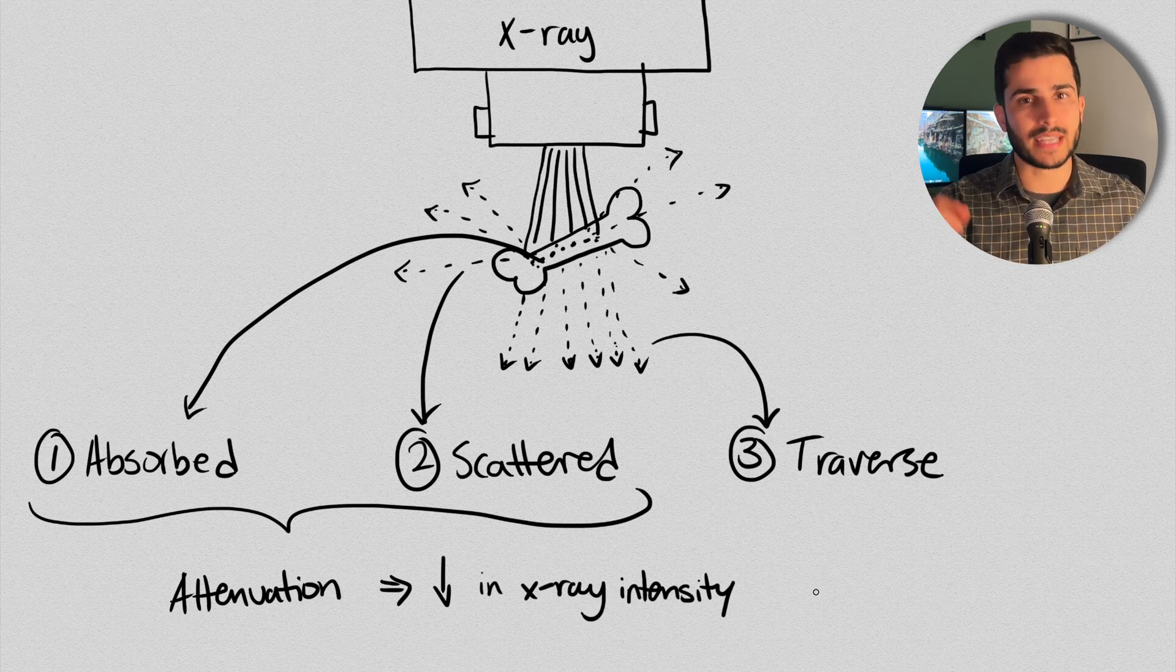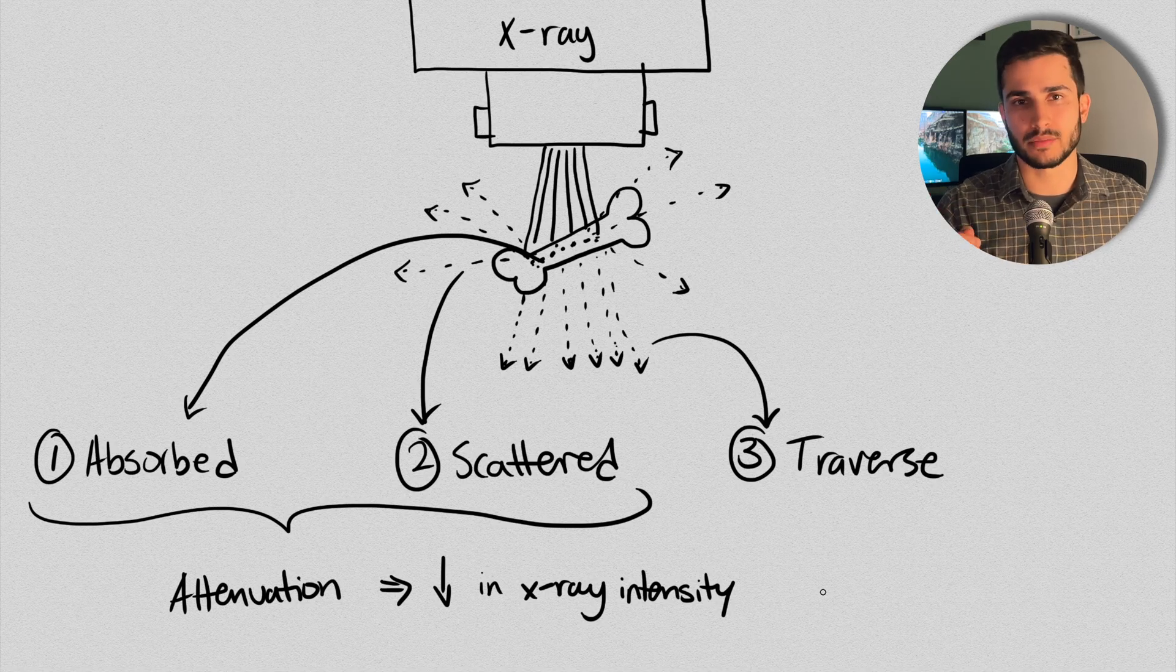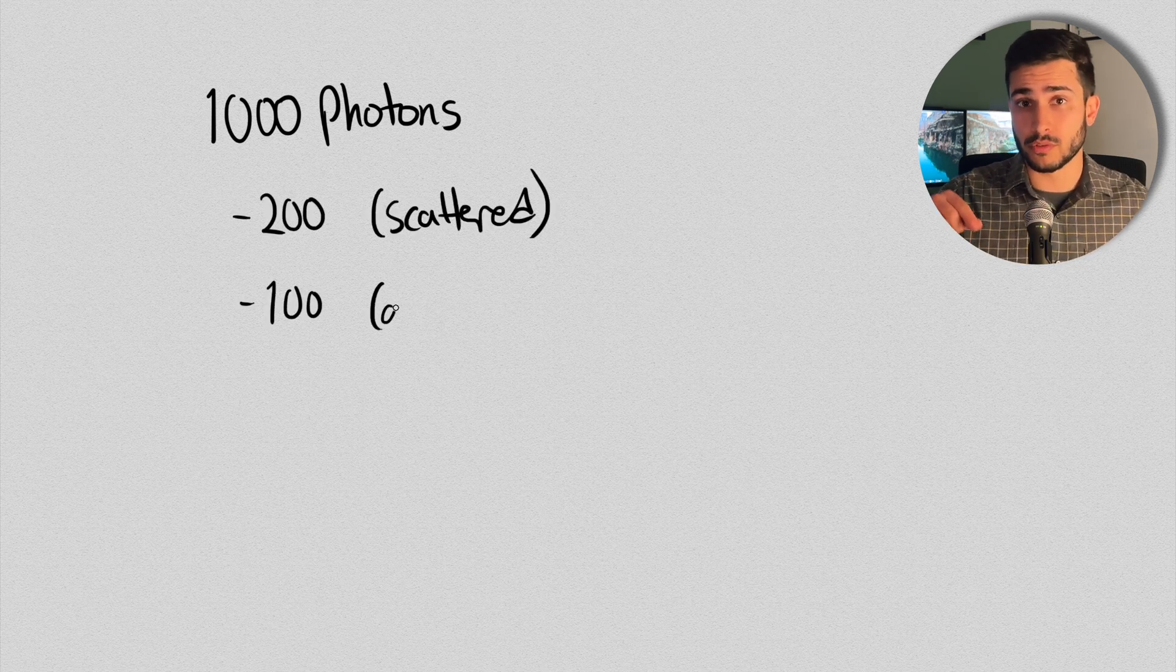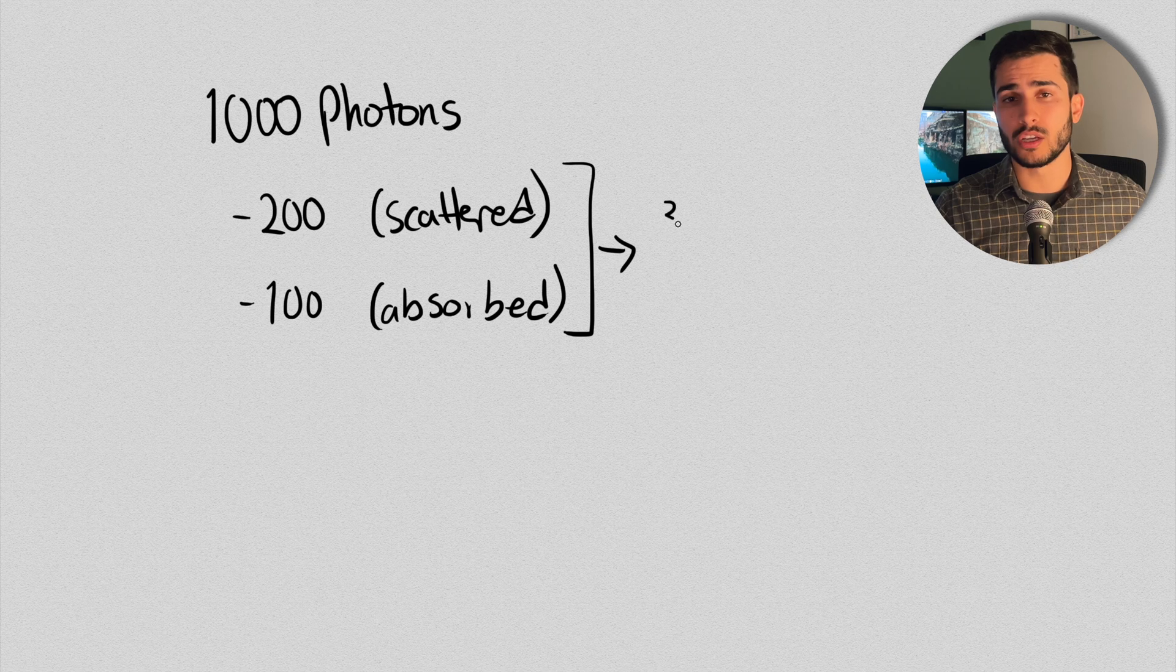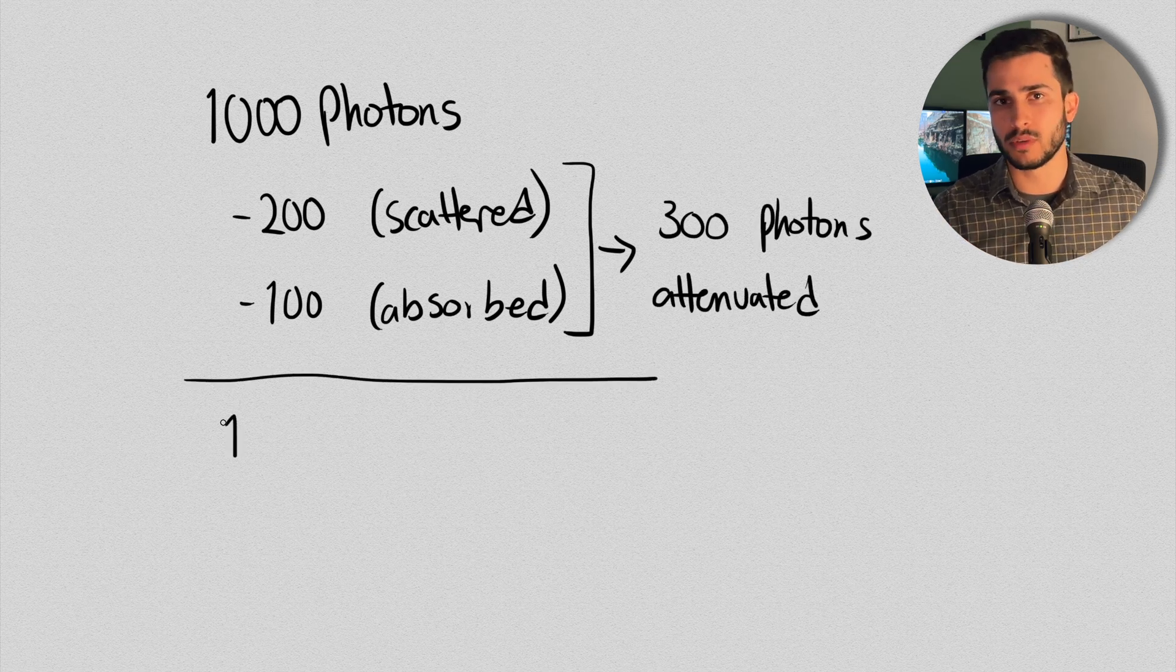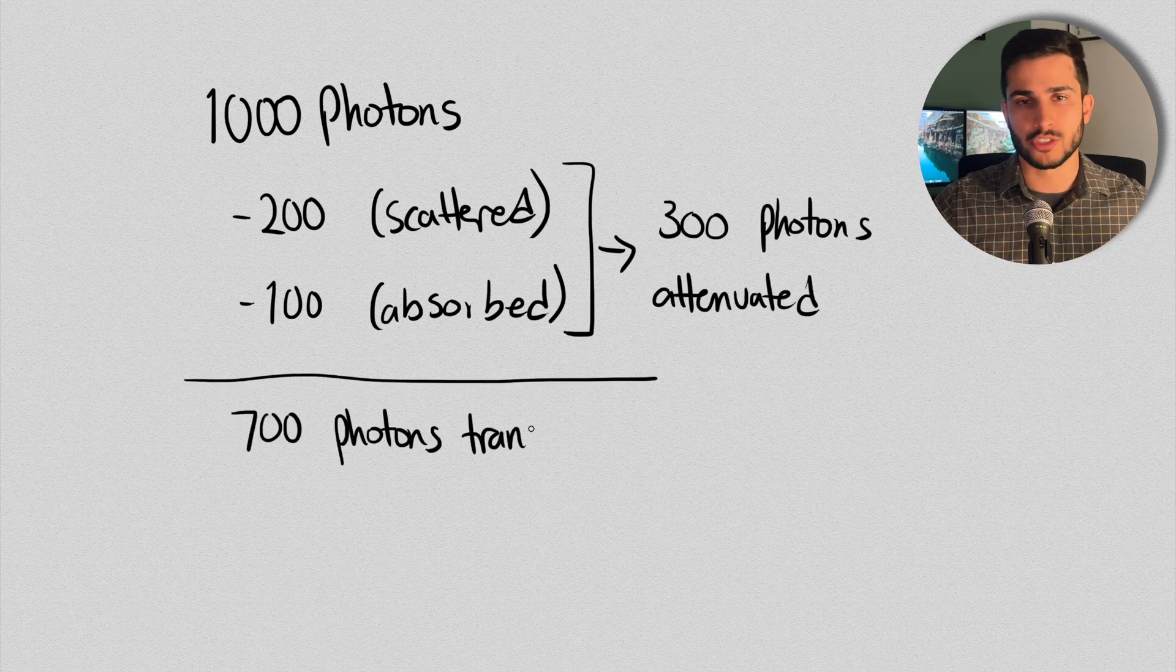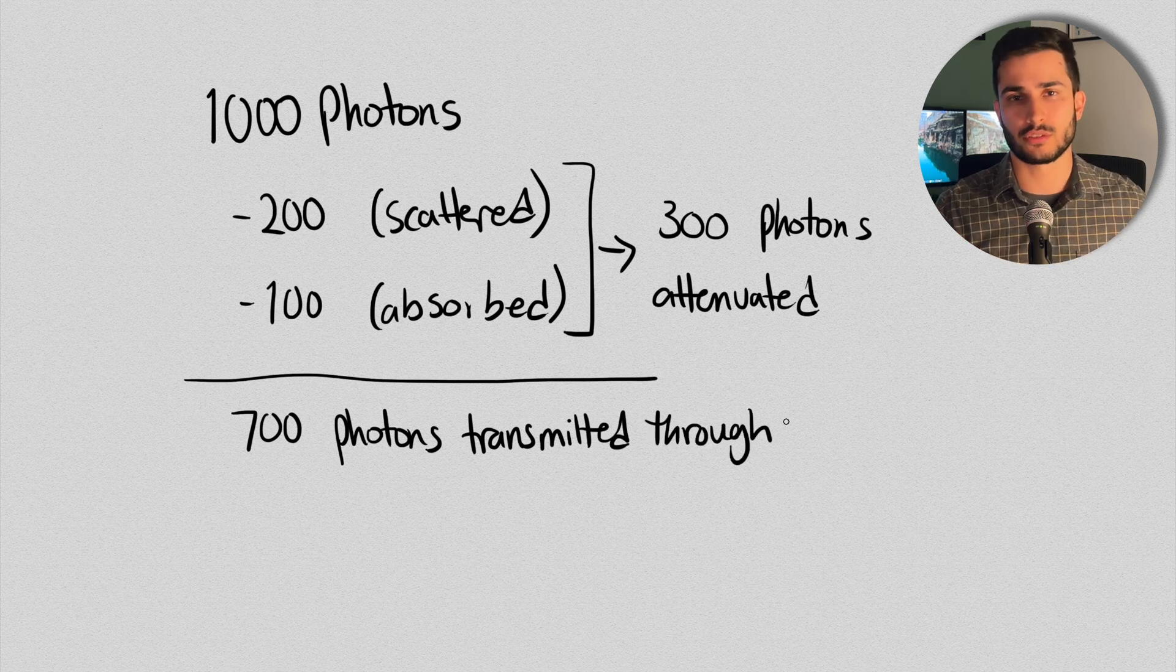So as an example, if we have a thousand photons that hit the material, and let's say 200 of them are scattered, and 100 of them are absorbed, then we say 300 have been attenuated from the original beam, and the other 700 have just traversed the material without any interaction.